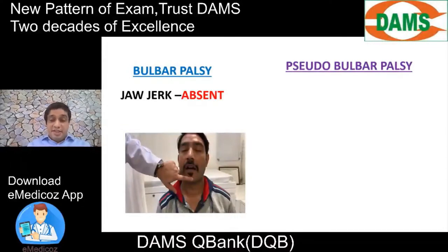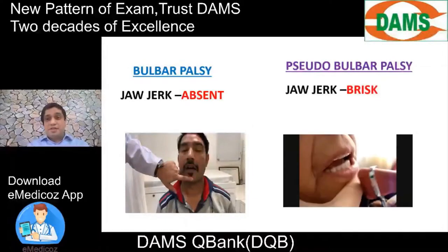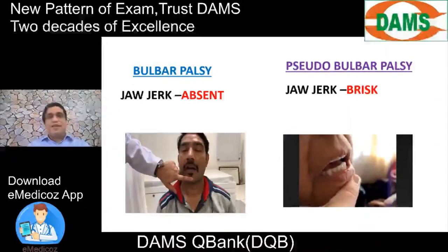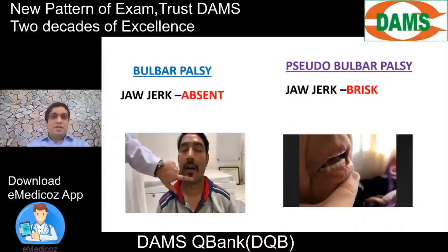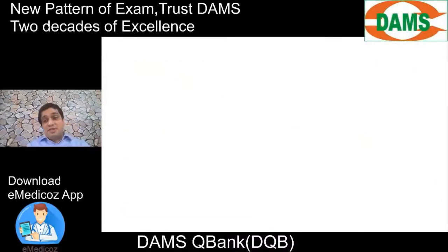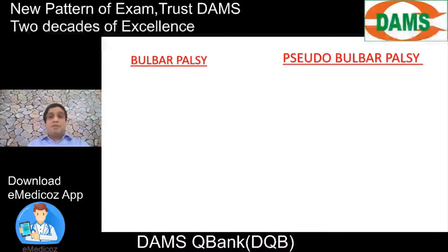An absent jaw jerk can be a normal finding, but an abnormal pathognomonic sign is always a brisk jaw jerk. Whenever you find a patient with a brisk jaw jerk in the ward, think of a supranuclear or pseudobulbar palsy.